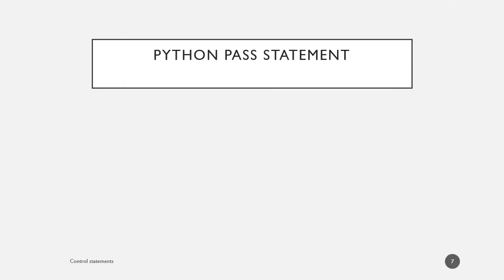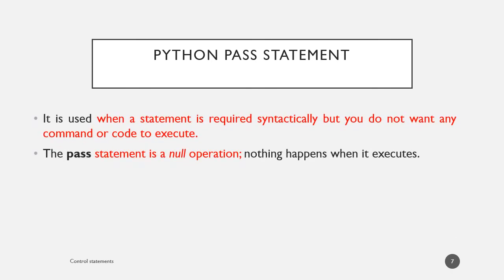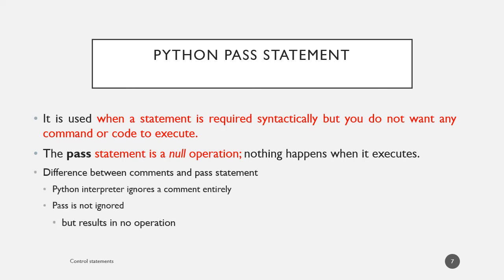This is the Python pass statement, a special statement in Python. It is used when a statement is required syntactically but you do not want any command or code to execute at that time. We can consider the pass statement as a null operation — nothing happens when it executes. What is the major difference between comments and the pass statement? The Python interpreter ignores a comment statement entirely, but the pass statement is not ignored; it results in a null operation. It does not mean we are ignoring the statement — it is just a null operation, meaning nothing has been executed at that time.